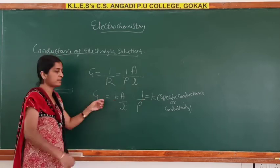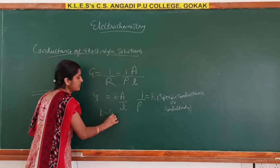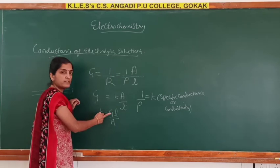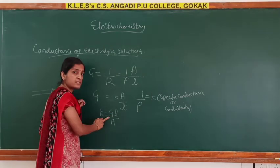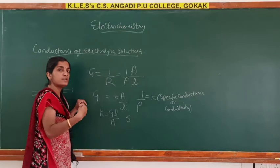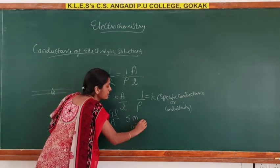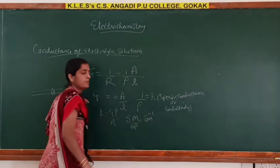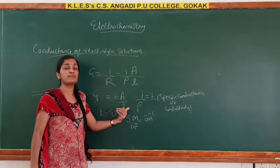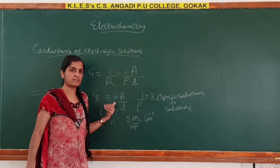The unit of specific conductance or conductivity is derived from kappa equals G times L divided by A. The unit of conductance G is per ohm or siemens; length is meter; area is meter squared. So the unit of specific conductance is siemens per meter.